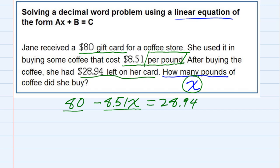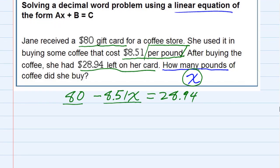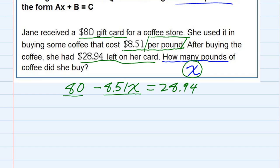This is our linear equation, and we just need to solve it, which means we need to get x by itself. The first thing we need to do is move every term that doesn't have an x to the other side. So I'm going to subtract 80 from the left, which means I also subtract 80 from the right.